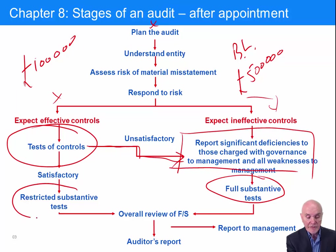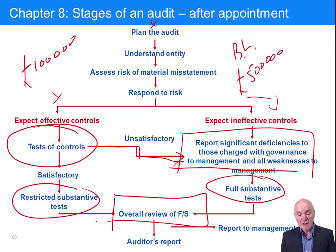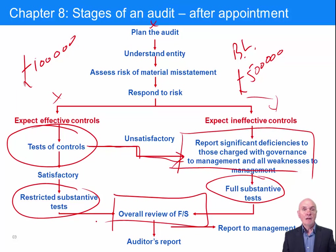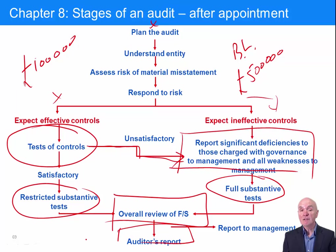Even where there's good internal controls, you nevertheless do some restrictive substantive tests — some direct testing of receivables, inventory, payables and so on. One way or the other, what we hope to have collected is sufficient information that there is reasonable assurance there are no material misstatements in the financial statements. The final step is the auditor's report: whether it's a clean unmodified audit report, or a qualified one — except for, disclaimer, or adverse opinion — whatever is appropriate after collecting all the evidence.